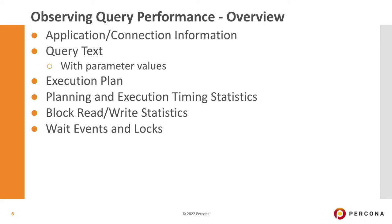The first and foremost is the ability to know the application executing the query, the connection information, and then the query text. In Postgres, certain extensions replace constant string literals or values with placeholders. That becomes a challenge if you want to rerun that query, because you have placeholders and not actual values. The result of a filter clause can vary drastically — from one to a million rows — depending on the value passed. So it's really important that you have the capacity to look at what the actual query text was.